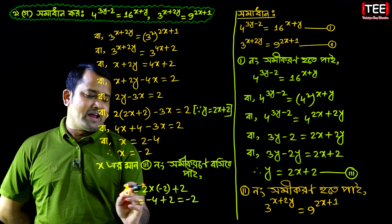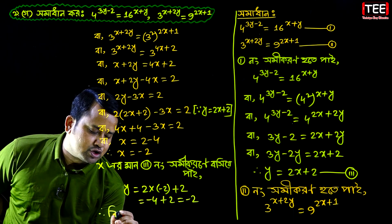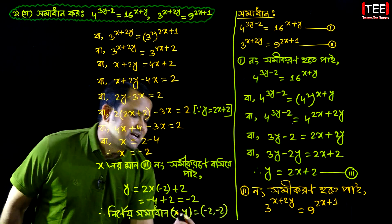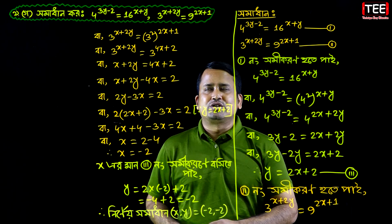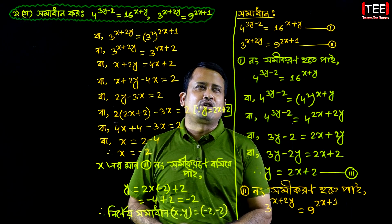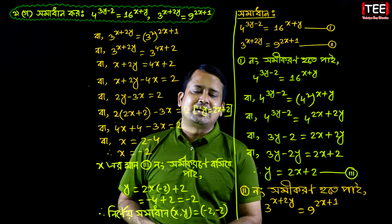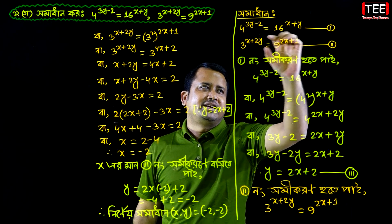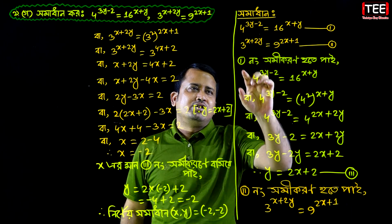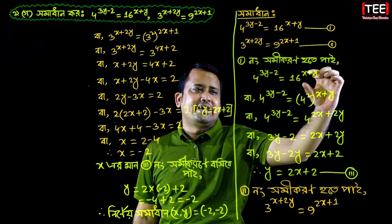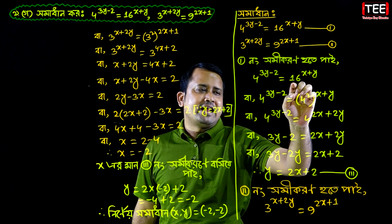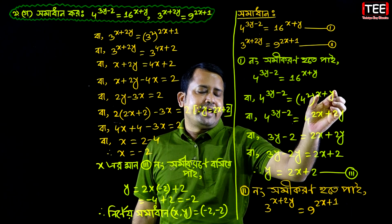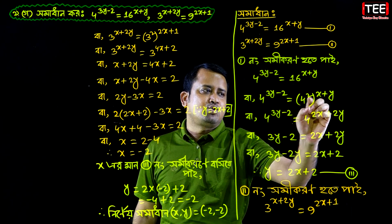x is equal to minus 2, y is equal to... My answer: I choose 2 and I choose 2. Then I choose 2, and I choose 2, and choose 3. 2x plus y, 2x plus 2y.